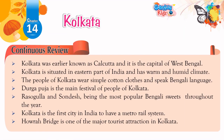Continuous Review. Kolkata was earlier known as Calcutta and it is the capital of West Bengal. Kolkata is situated in the eastern part of India and has a warm and humid climate. The people of Kolkata wear simple cotton clothes and speak the Bengali language. Durga Puja is the main festival of the people of Kolkata. Rasgulla and Sondesh are the most popular Bengali sweets throughout the year. Kolkata is the first city in India to have a metro rail system. Howrah Bridge is one of the major tourist attractions in Kolkata.